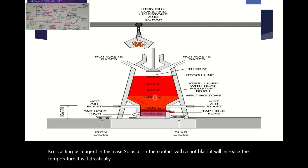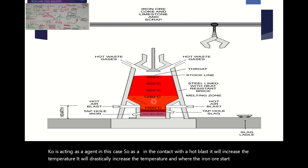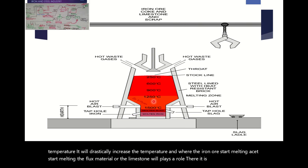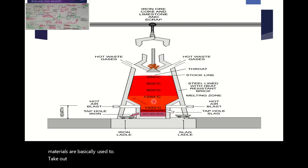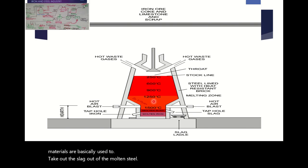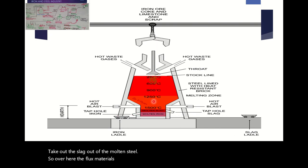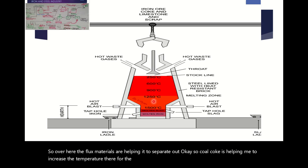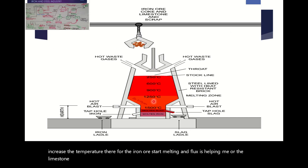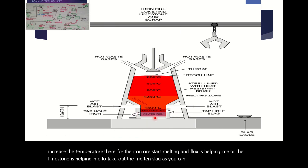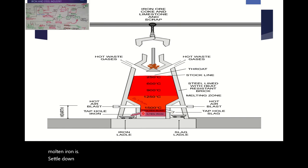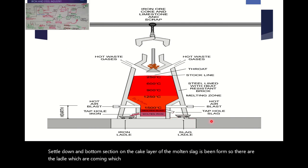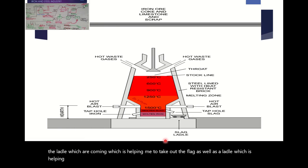As the temperature rises, the iron ore starts melting. The flux material or limestone then plays a role — it helps to take out the slag from the molten iron. So coke is helping to increase the temperature so the iron ore melts, and limestone helps to remove the molten slag. As you can see in the bottom section, the molten iron settles at the bottom while a layer of molten slag forms above it. Ladles come to take out the slag as well as the molten iron.